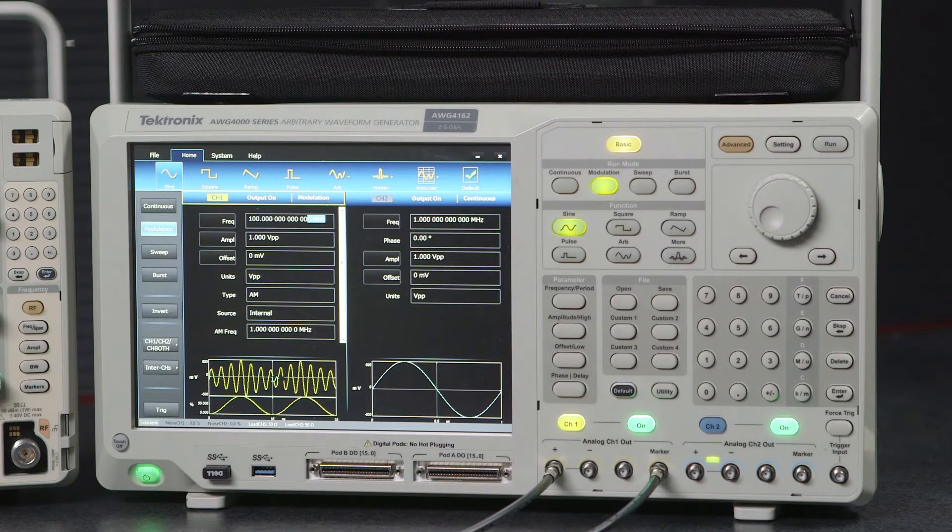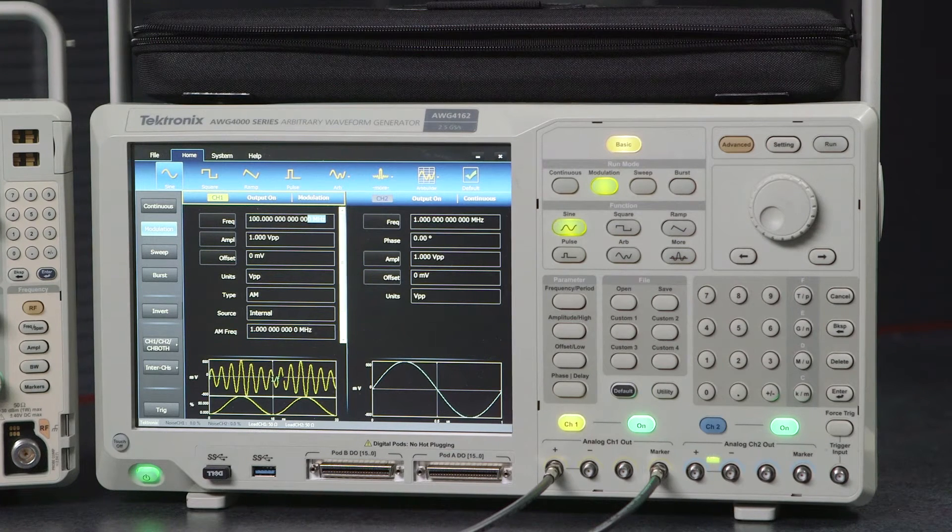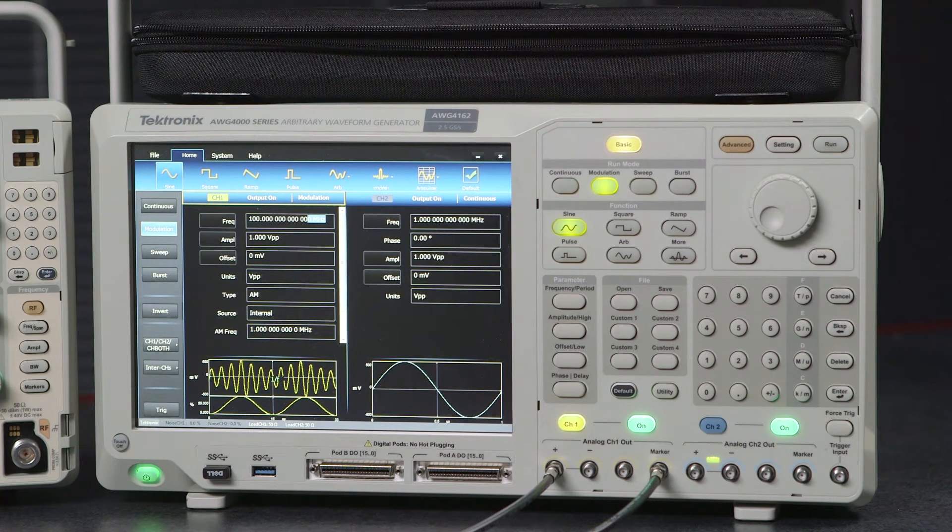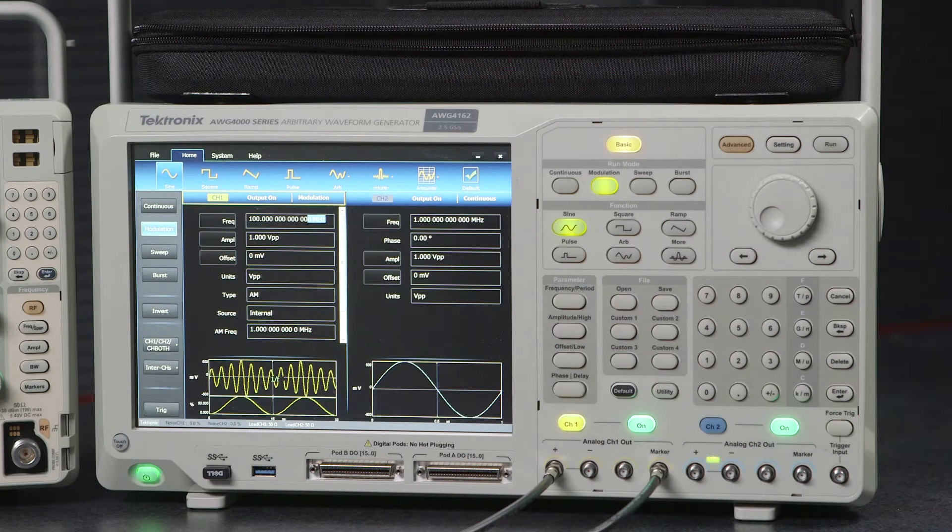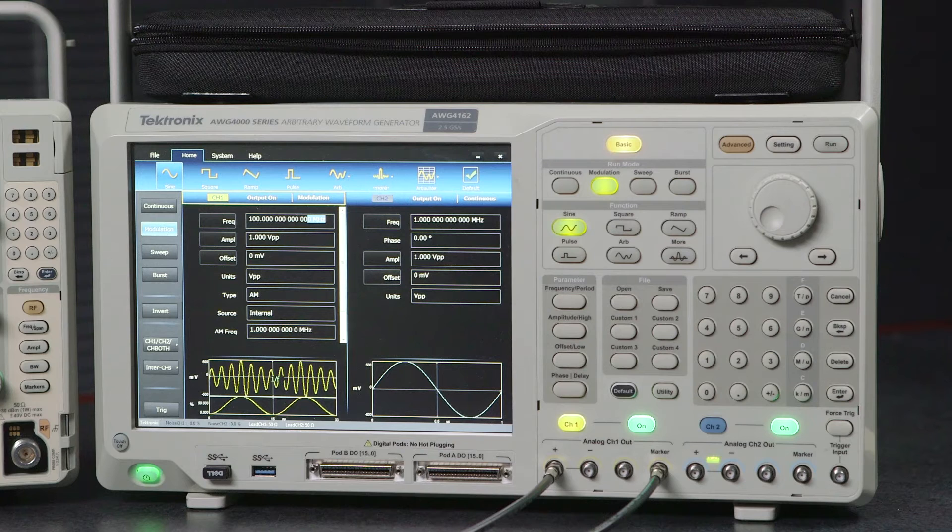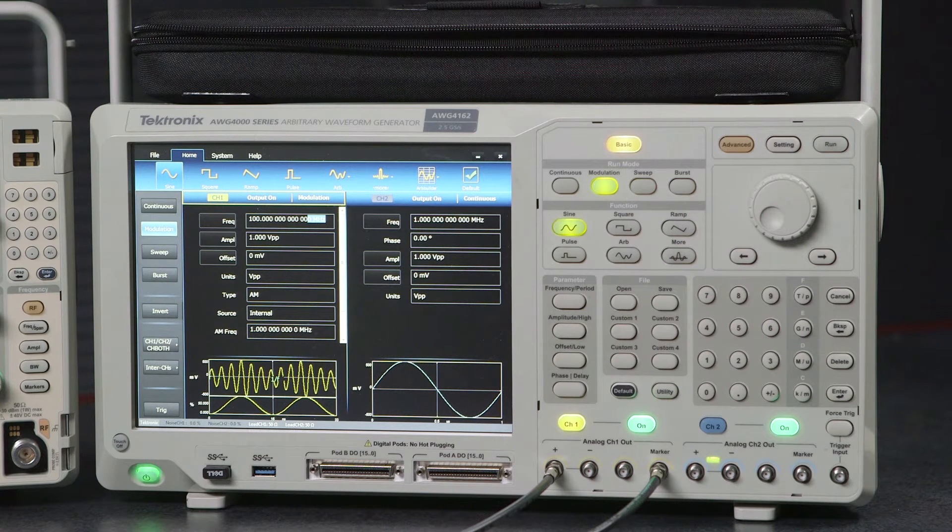Next up we're going to generate a sweeping waveform. A sweeping sine wave signal is extremely useful for analog design engineers to generate a flat sine wave across the frequency between start and stop to test the frequency response of amplifiers and filters.